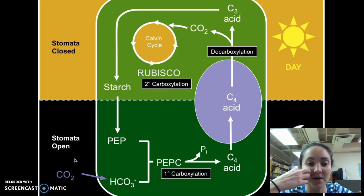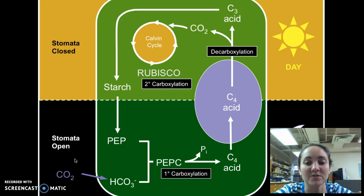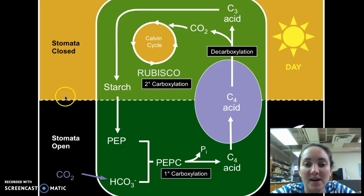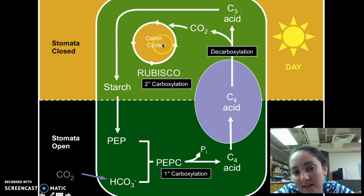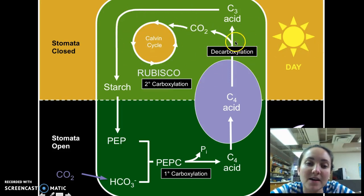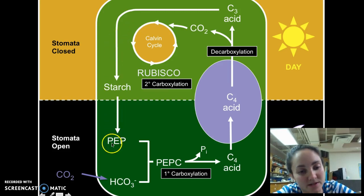What this diagram is showing is temporal separation — the two processes of photosynthesis are separated by time. The Calvin cycle and the light-dependent reactions happen during the daytime, while the light-independent reactions happen at nighttime.